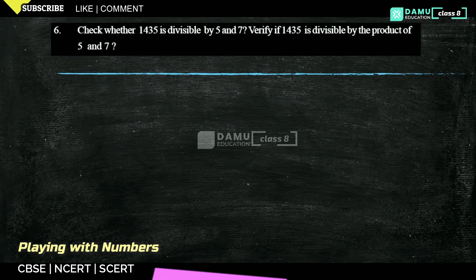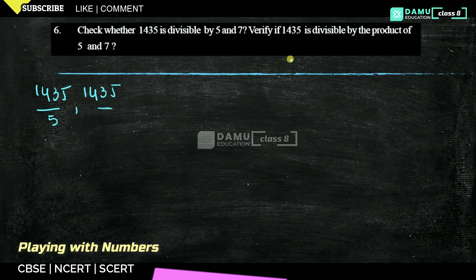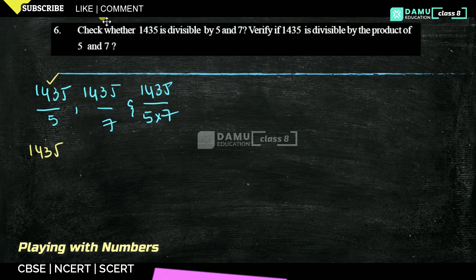Our next question: check whether 1435 is divisible by 5, and 1435 is divisible by 7, and then check whether 1435 is divisible by the product of 5 and 7, which is 35. First, we check with 5. For 1435, the unit digit is 5, so it is divisible by 5.